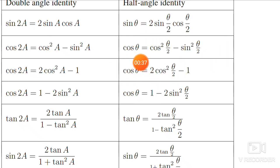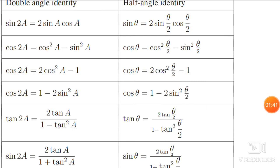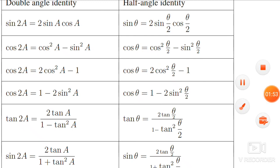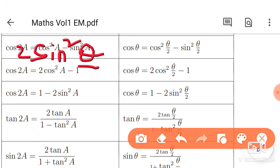This is sin squared theta by 2. We see sin squared theta by 2 and find the value. The formula gives us the right side. So if we find the value of sin theta by 2 using this formula, we find the value of cos theta by 2, which is equal to 1 minus cos theta on the right side.